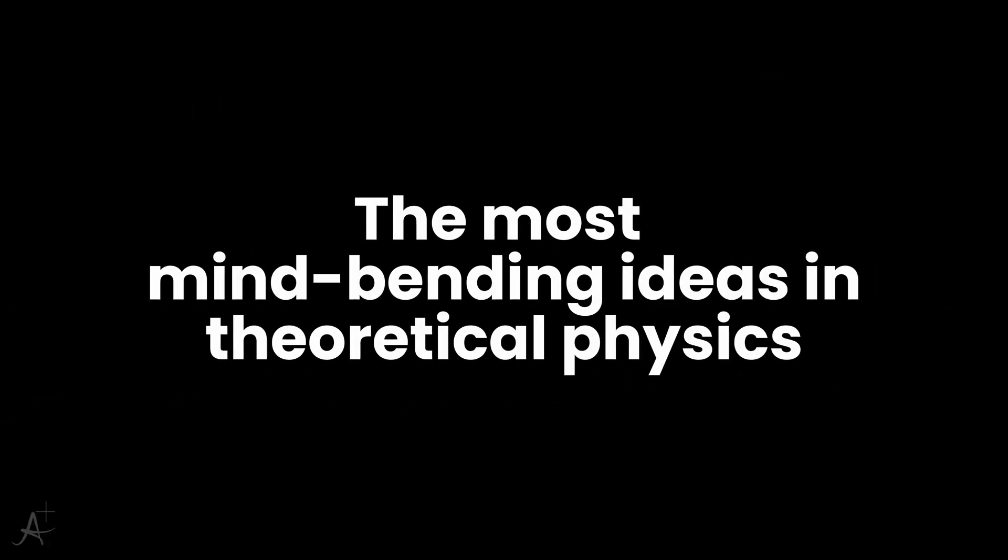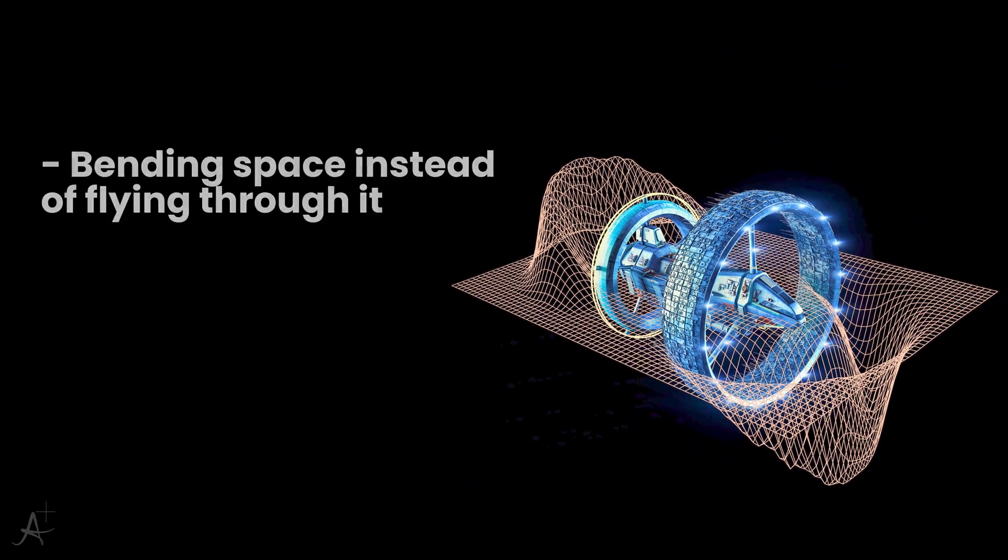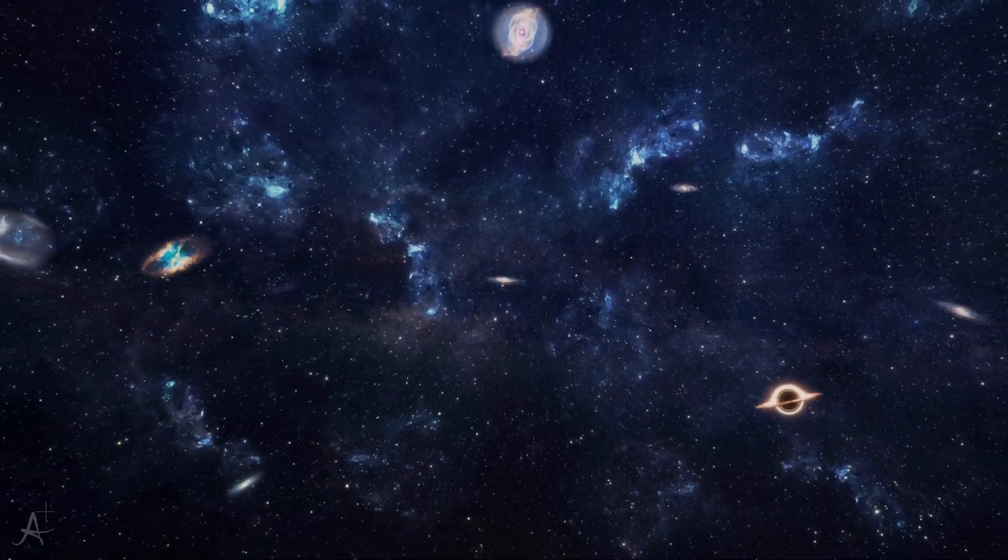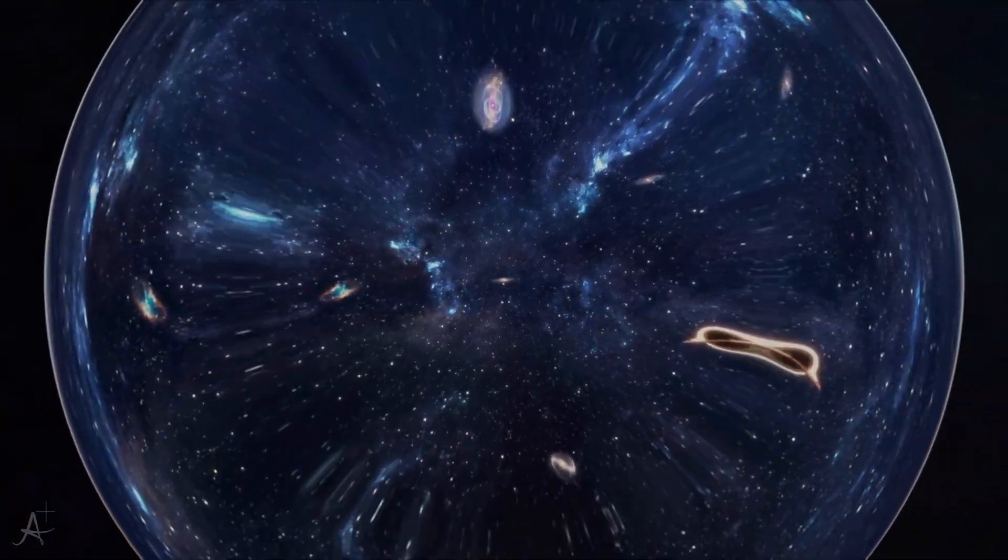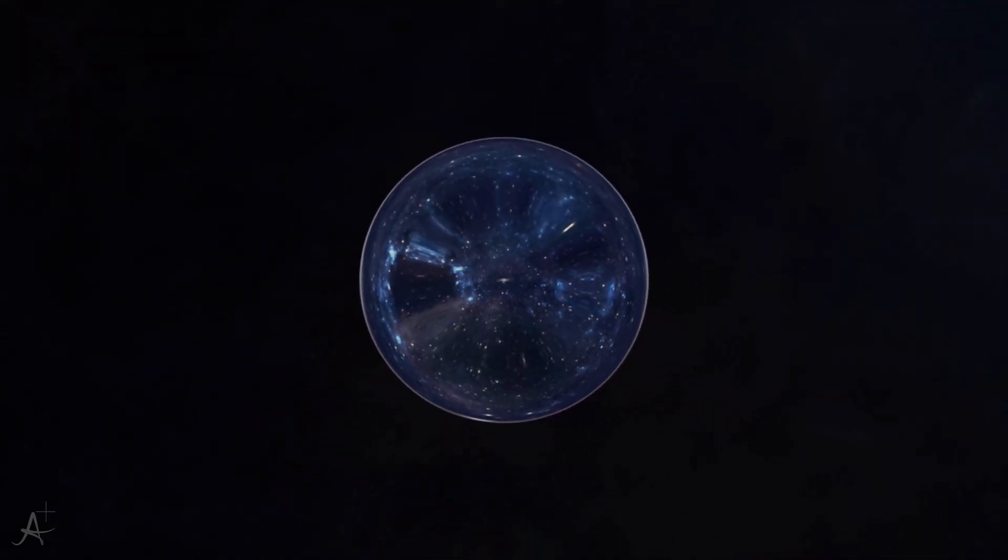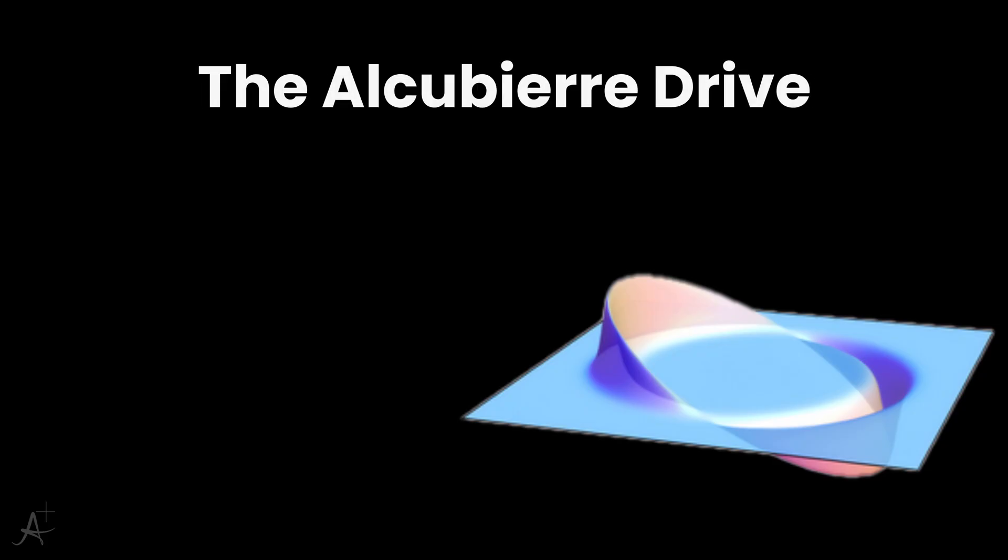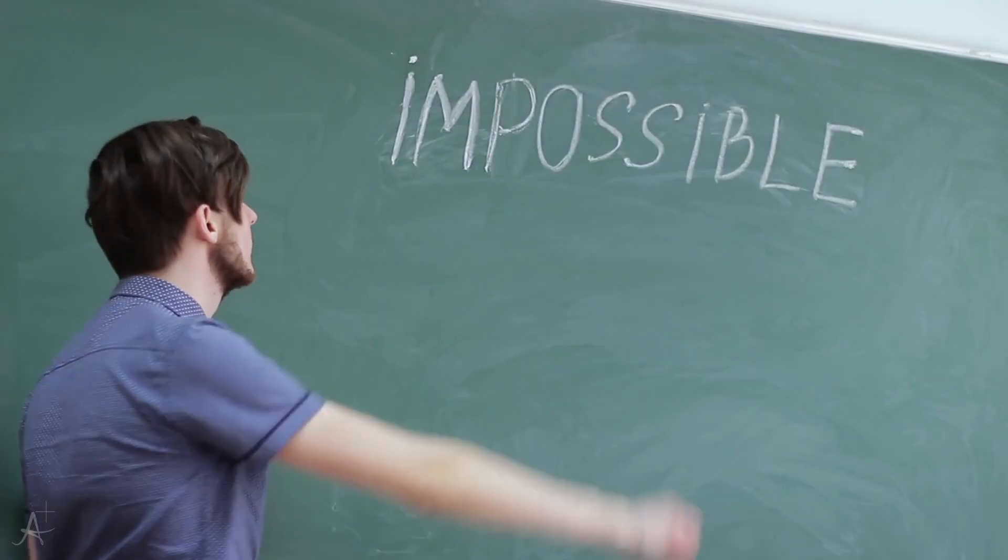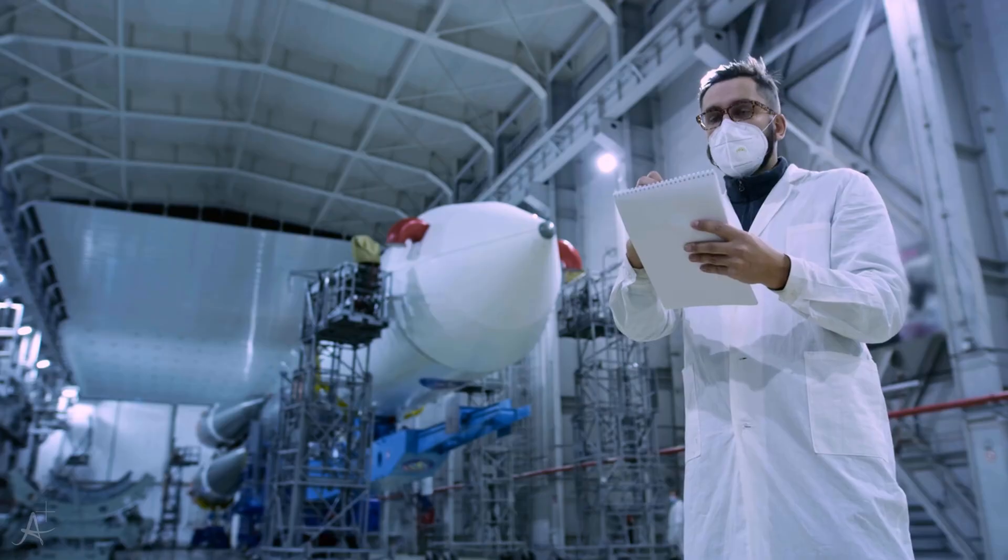It doesn't violate relativity because nothing is actually traveling through space at superluminal speeds. It's space that's doing the moving. That leads to one of the most mind-bending ideas in theoretical physics: the warp drive. Imagine a spacecraft that doesn't fly through space but instead bends space around it. It compresses space in front and expands it behind, creating a bubble that rides the waves of spacetime itself. Inside the bubble, you wouldn't feel like you're moving at all. But to an outside observer, you'd appear to be moving faster than light. This concept is known as the Alcubierre drive, named after the Mexican physicist Miguel Alcubierre, who proposed it in 1994. The equations show that it's theoretically possible. But there's a massive catch.